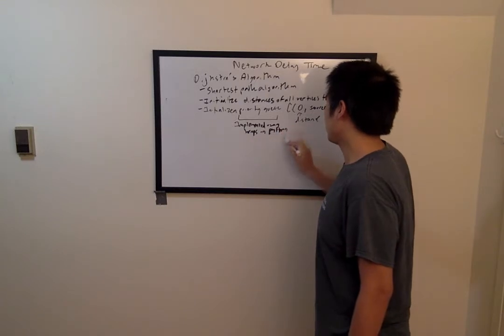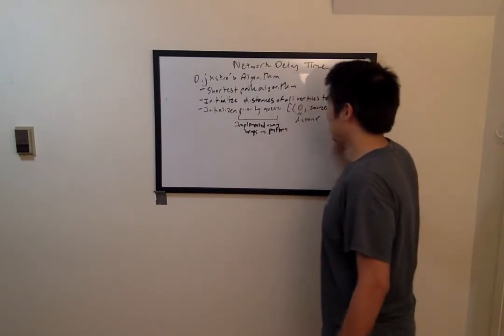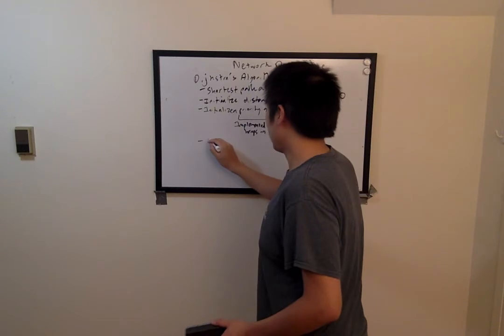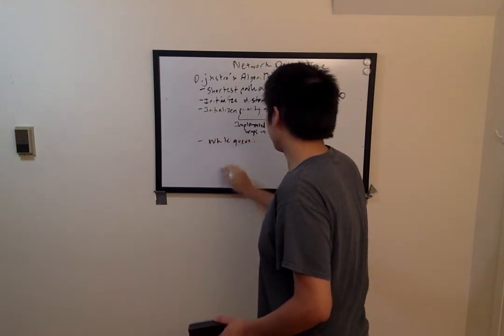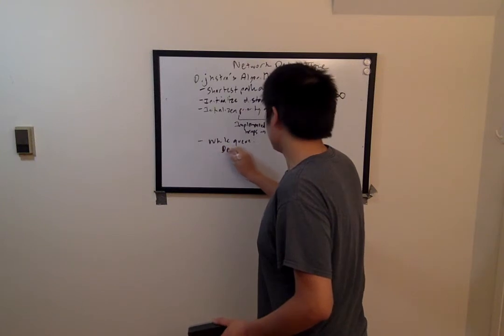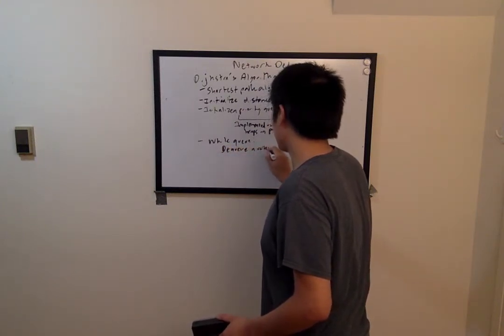So you enqueue the first vertex with a distance of 0, and then while the queue is not empty, you will do the following. You will dequeue a vertex and mark as completed.